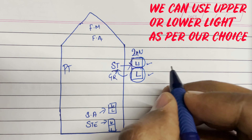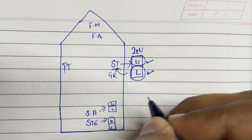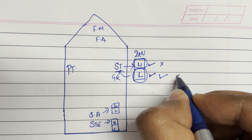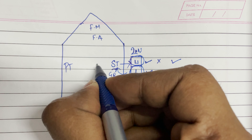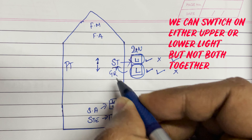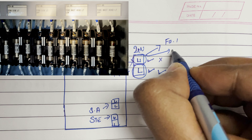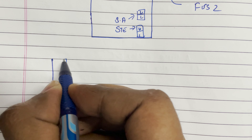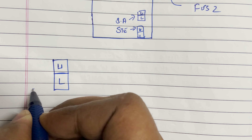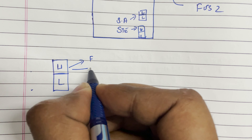There is nothing known as main or backup — both are main lights. You can switch on the upper light or the lower light, whichever you want. If the upper light gets fused, use the lower light, and vice versa. At any given time, we can only switch on either the upper light or the lower light. For each light, there are also two fuses: fuse 1 and fuse 2.